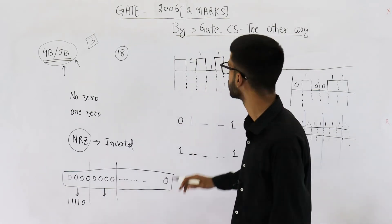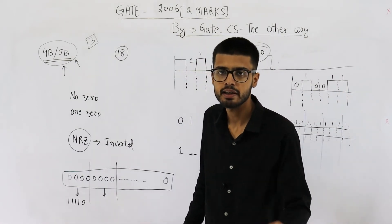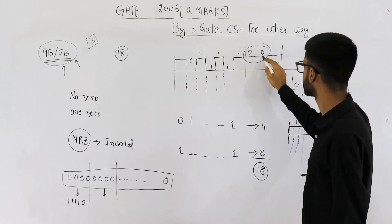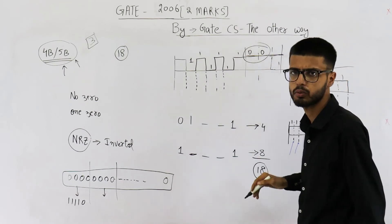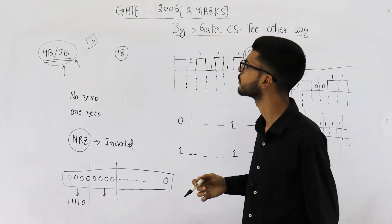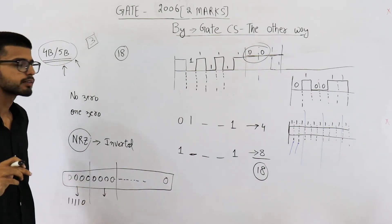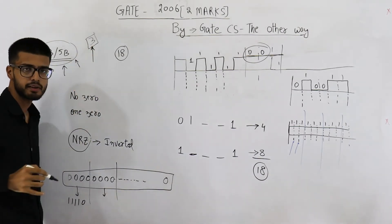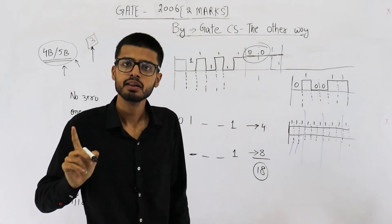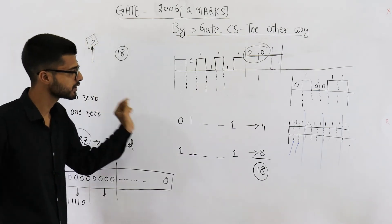Continuous ones were never a problem because we are using NRZi. Continuous zeros were a problem, but the data we actually send will never contain more than 3 continuous zeros. Three continuous zeros can be easily guessed by the receiver from the length of the signal. The problem is when you have very large numbers of continuous zeros. Note that in the actual scheme, up to 3 continuous zeros are allowed, but the question is slightly modified — it only allows up to 2 zeros.